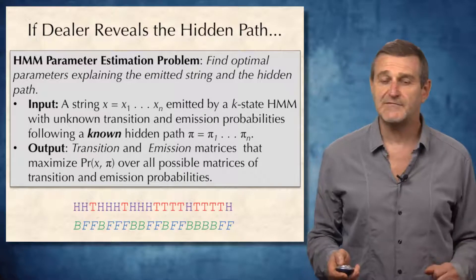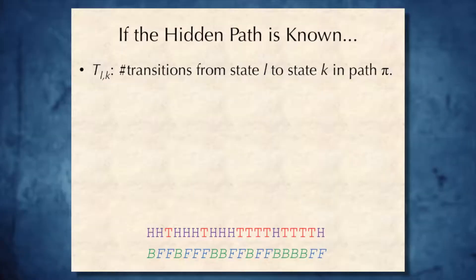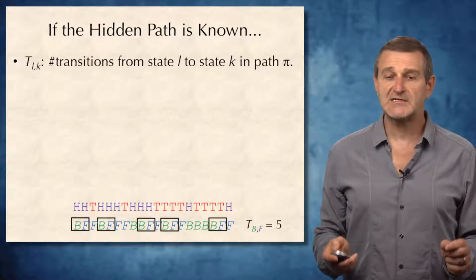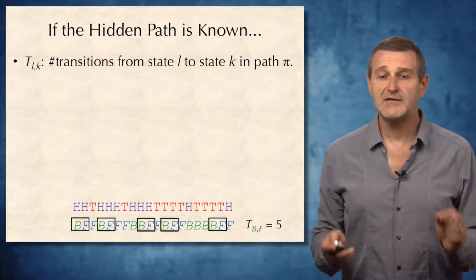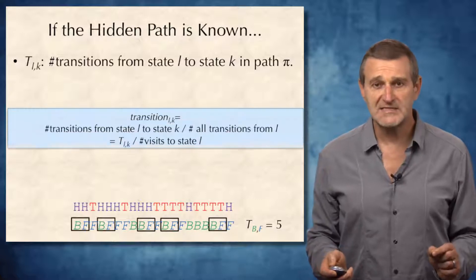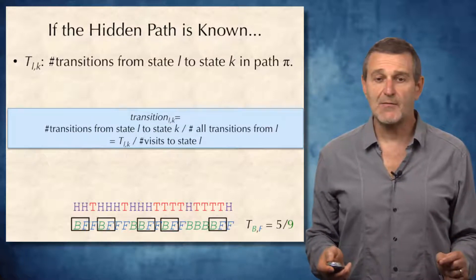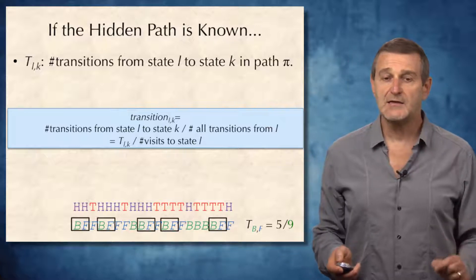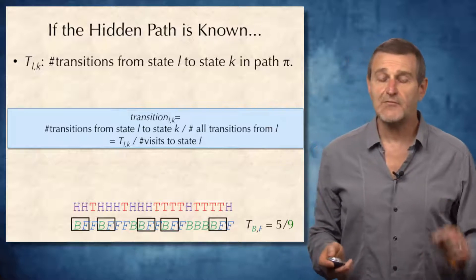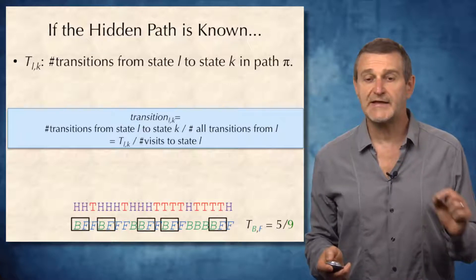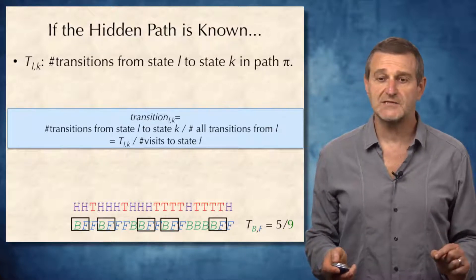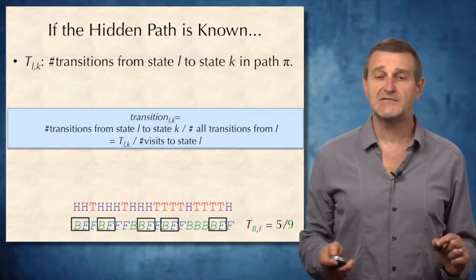How would we derive transition and emission probabilities? In the case the hidden path is known, let's define T_{l,k} as the number of transitions from state l to state k in the hidden path pi. For example, in this case, the number of transitions from B to F equal to 5. And then common sense suggests that the transition probabilities from state l to state k can be defined as the number of transitions from state l to state k divided by the number of all transitions from state l, and in this case it will be 5 over 9.